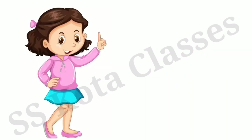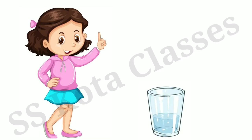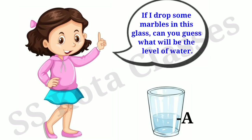Sarika collects things like marbles, coins, erasers, etc. She takes some water in a glass and marks the level of water as A. She then asks: if I drop some marbles in this glass, can you guess what will be the level of water?